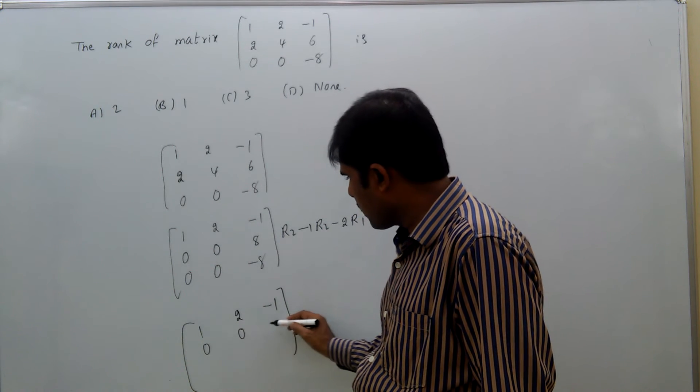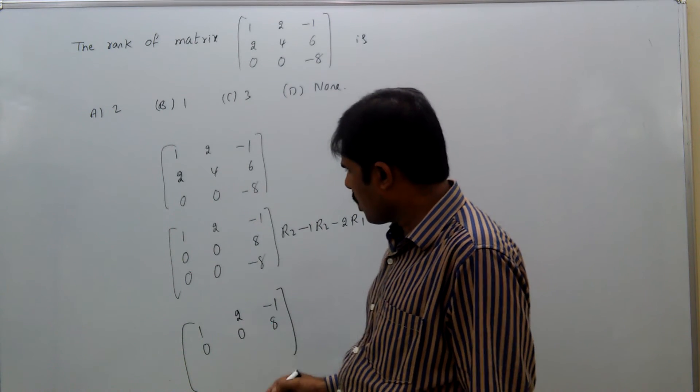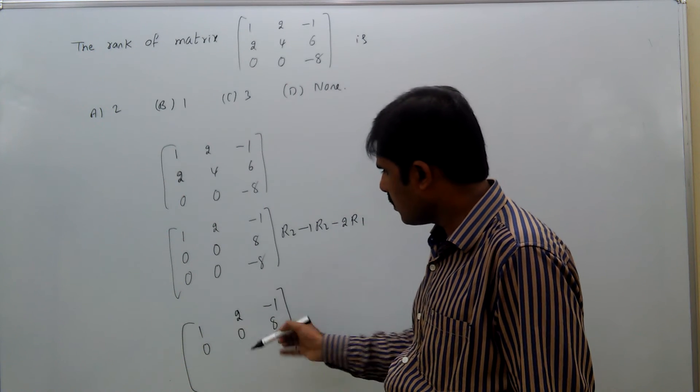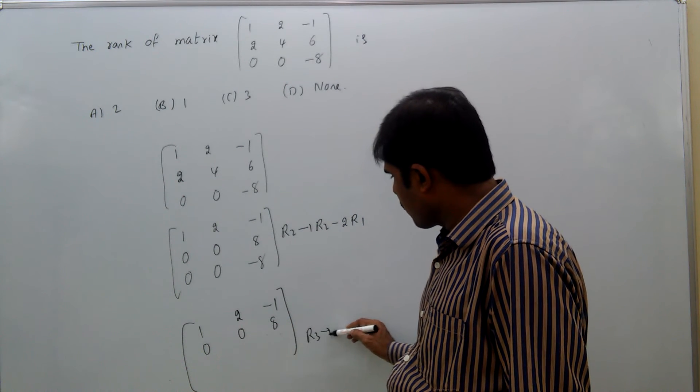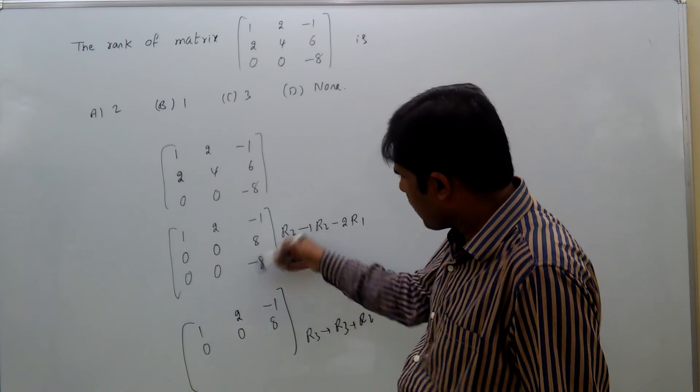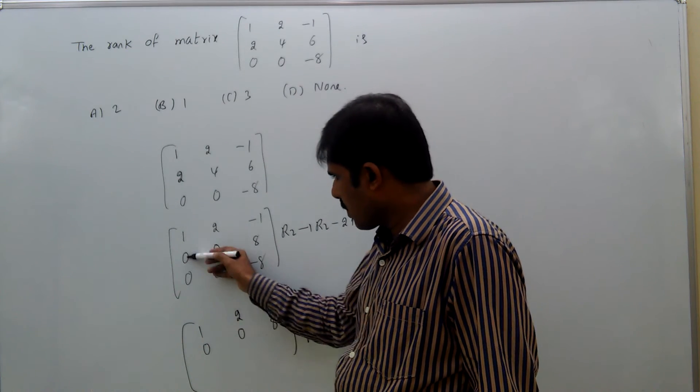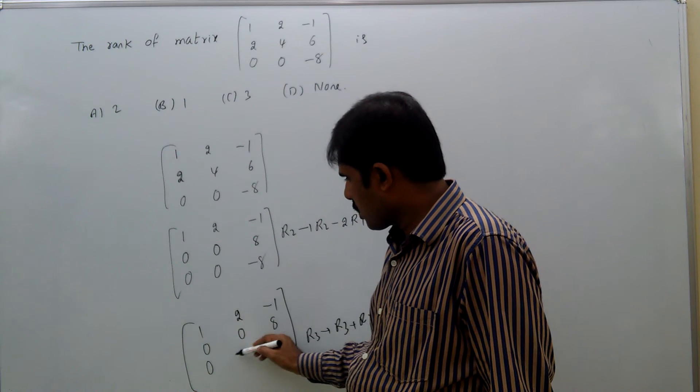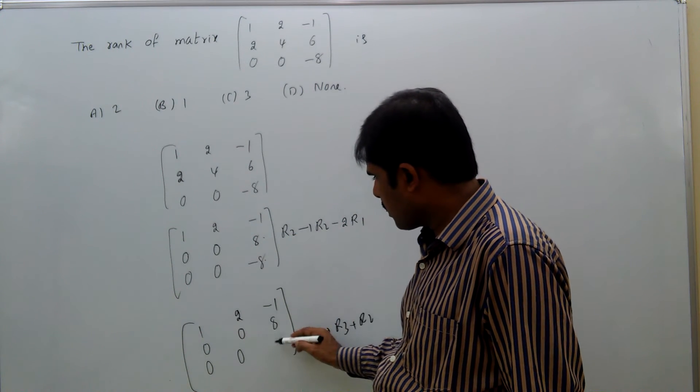That means, second row we will write the same way. And for the third row, R3 equals R3 plus R2. If you add that one to this, then 0 plus 0 is 0, 0 plus 0 is 0, minus 8 plus 8 is 0.